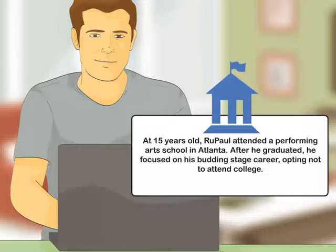Include the person's schooling. Include details on the person's education, such as where they went to grade school or high school. Mention any details about their schooling that reflect on their career or achievements later in life. For example, you may write: at 15 years old, RuPaul attended a performing arts school in Atlanta. After he graduated, he focused on his budding stage career, opting not to attend college.